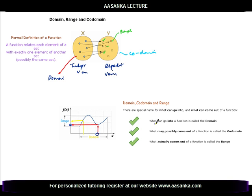In a nutshell: what can go into a function is called the domain; what may possibly come out of a function is called the codomain — so all possible values 1, 2, 3, 4, 5, 6 would be codomain; and what actually comes out of a function is called the range. What the function attains in a given situation is the range.